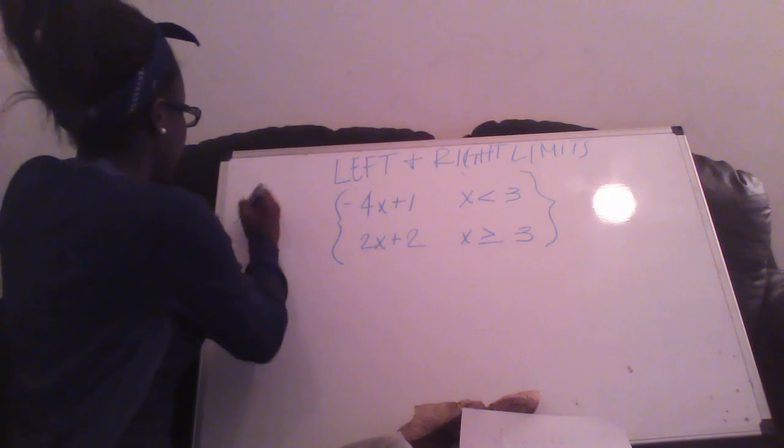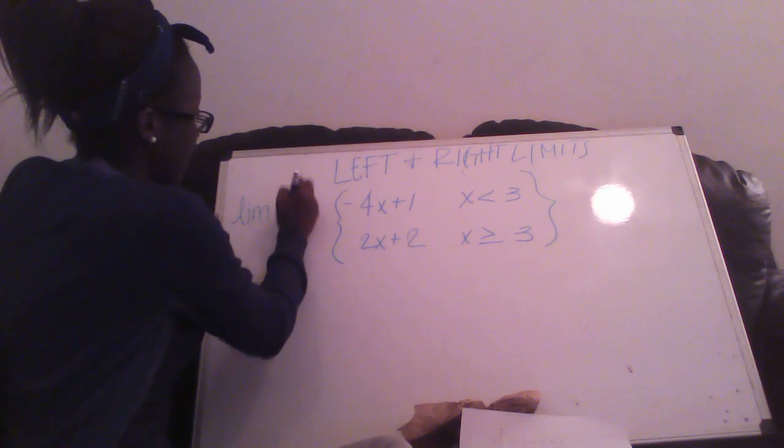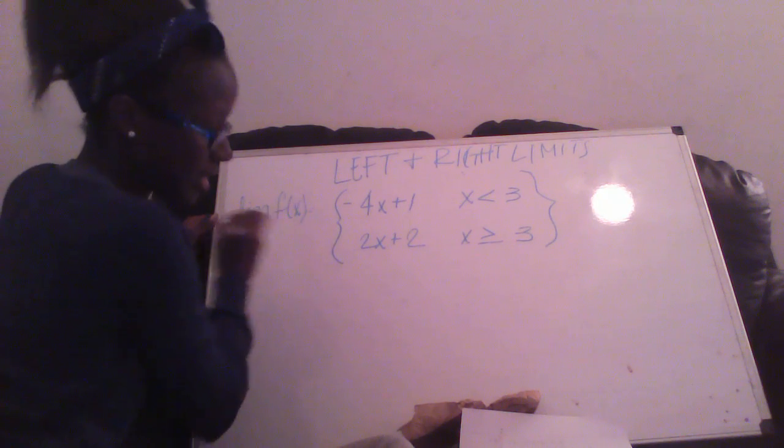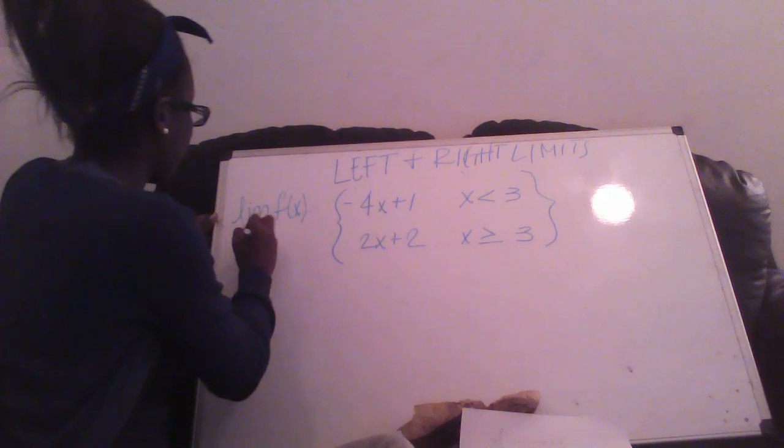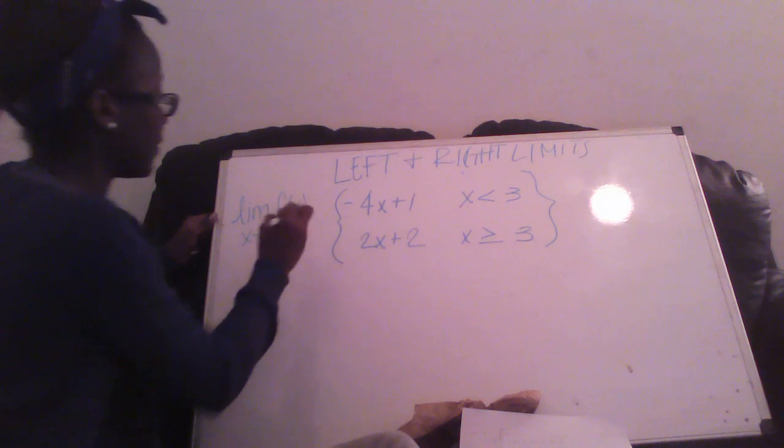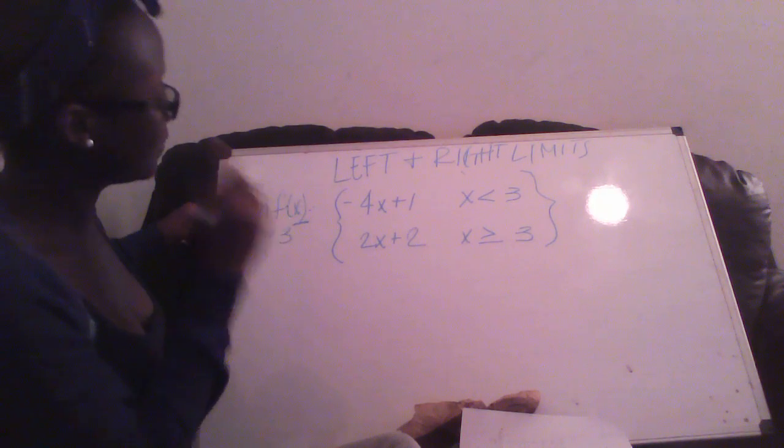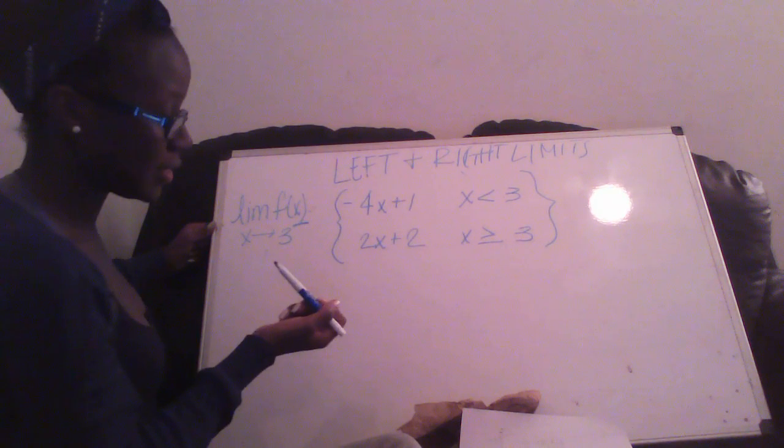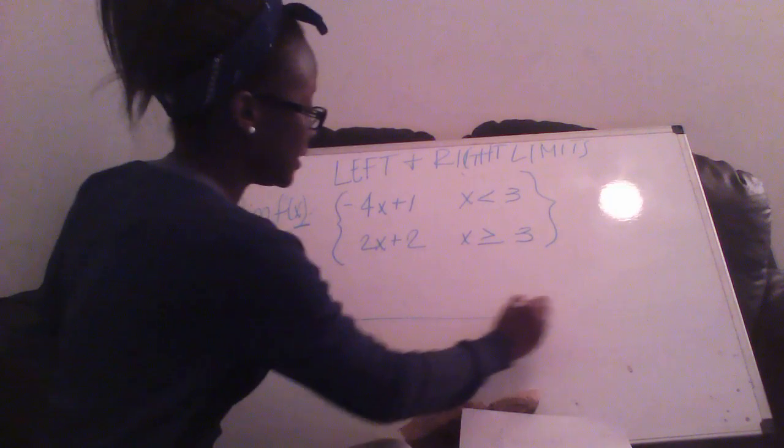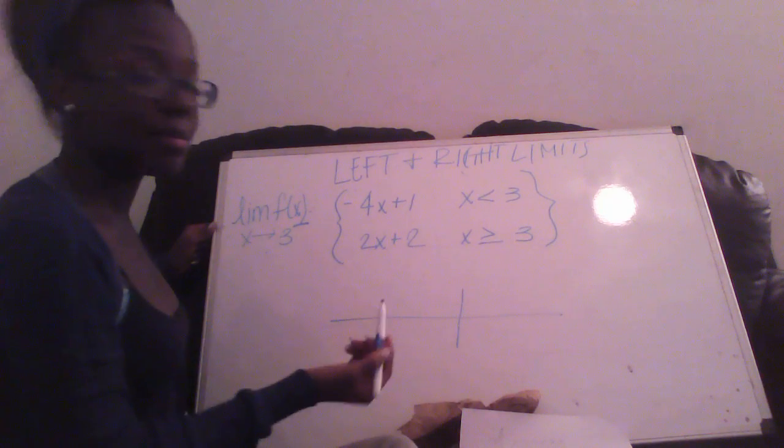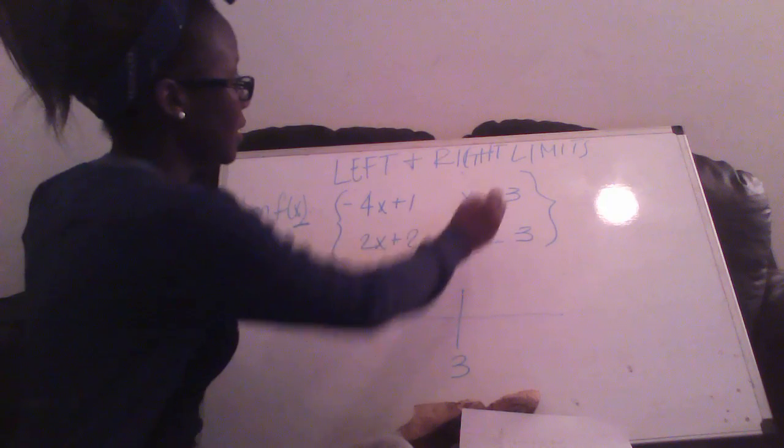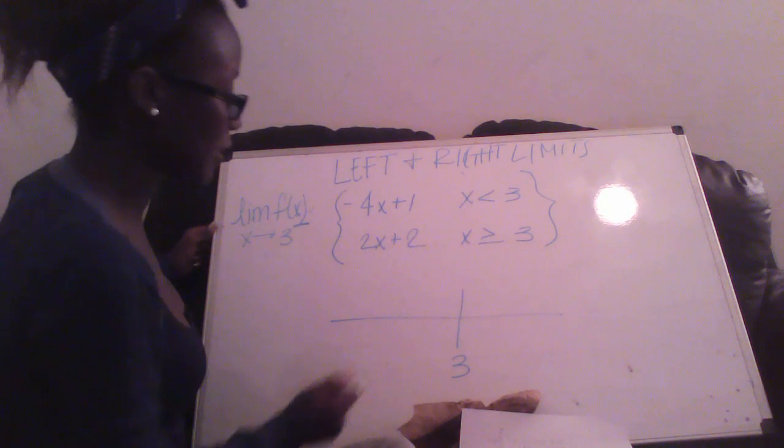So for this one, it's asking us to find f as it approaches from the left side. If you look at these two problems, it's easier to draw a number line. Just put the number that you have here, which is 3.